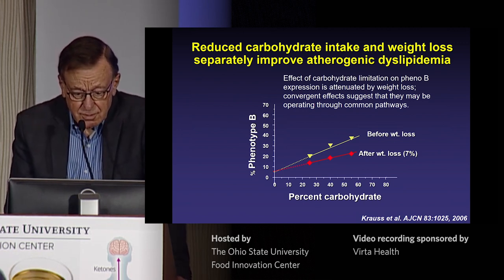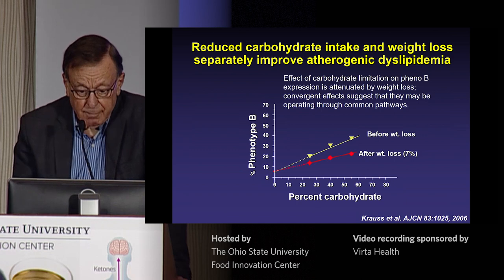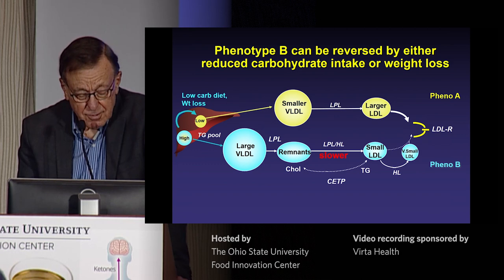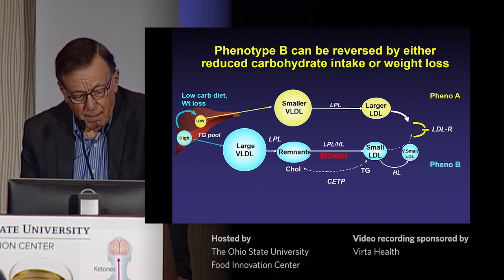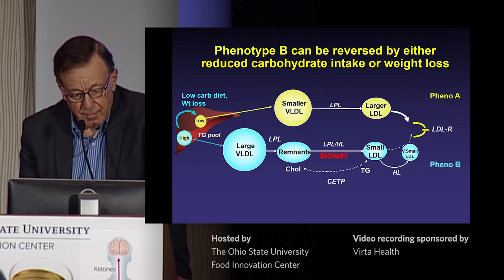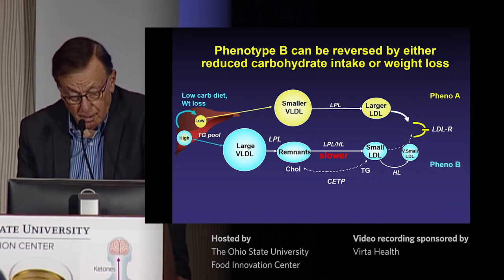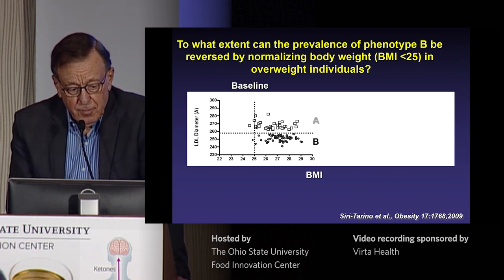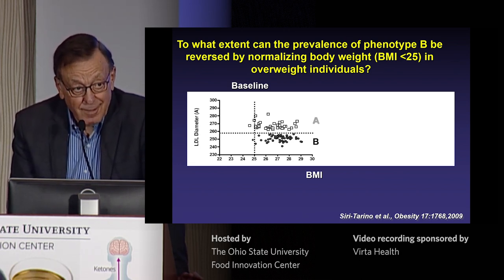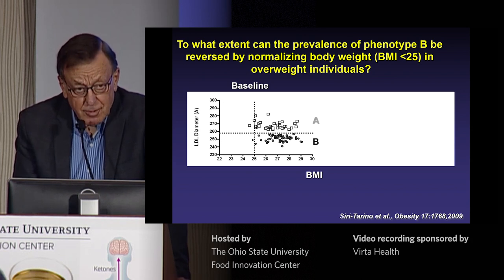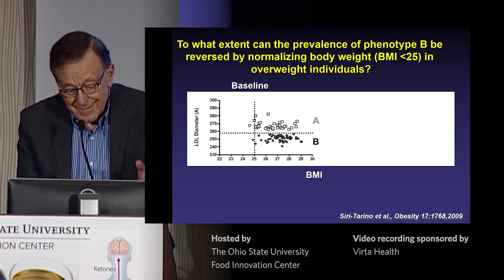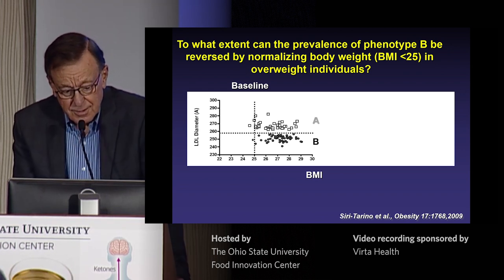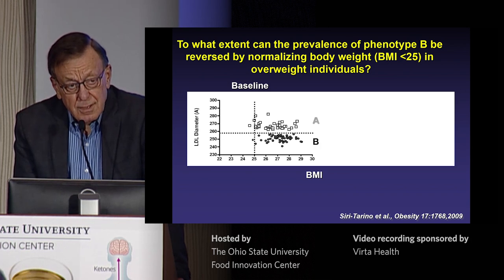These conversion effects of carbohydrate restriction and weight loss suggest they may be operating through common pathways. We think each may operate at least in part by flipping hepatic metabolism out of the B mode into the A mode. In the last few minutes, I want to take you into some observations from these and subsequent studies that intersect with the interests here in ketogenic diets.